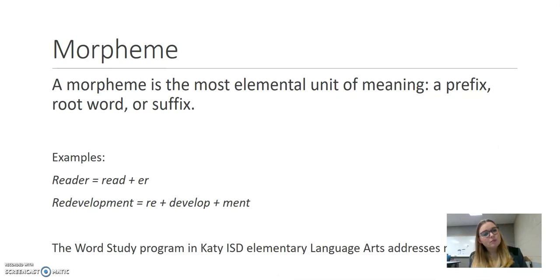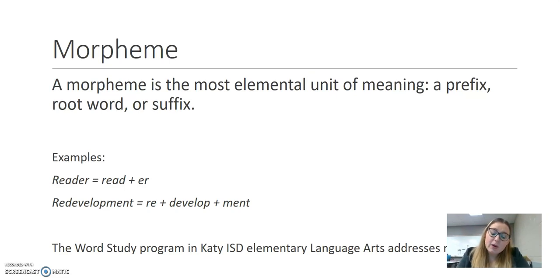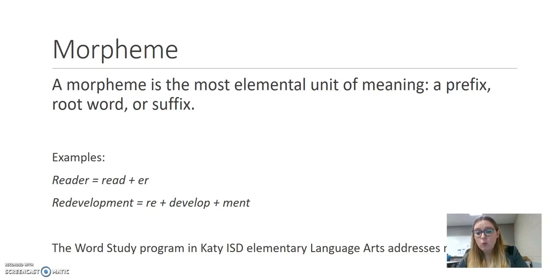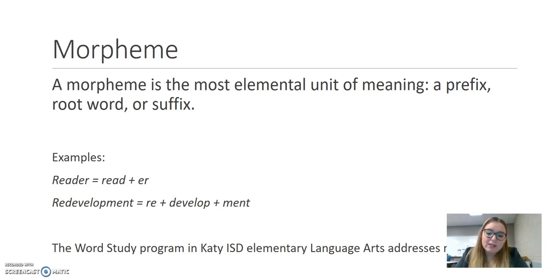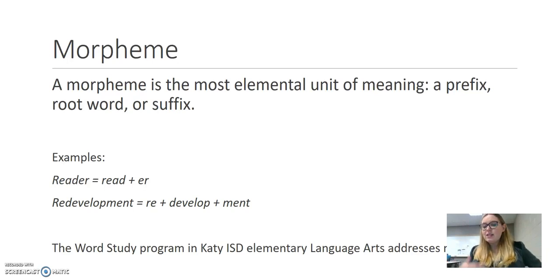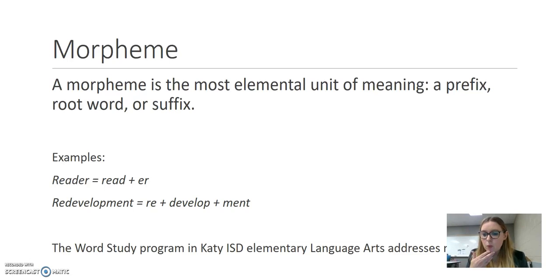Moving on from phonemes, we move into morphemes. Morphemes are the most elemental units of meaning — these can be prefixes, root words, or suffixes. For example, in the word 'reader,' you have the morpheme 'read' and the morpheme 'er,' meaning one who does this thing. In 'redevelopment,' you have the morphemes 're,' 'develop,' and 'ment' — three morphemes picking up units of meaning. Teaching morphology to English language learners is very helpful because they can apply what they've learned about morphemes to new contexts as they come across new words. It's an important word attack skill.